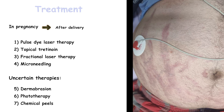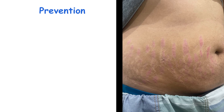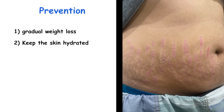There are various ways to prevent stria distensae, such as gradual weight management, since rapid weight gain or loss may affect the skin and promote stretch mark development. Keeping the skin hydrated with moisturizing creams or lotions is also beneficial. A diet rich in vitamins C and E, zinc, and silica can support skin health. Routine exercise helps maintain healthy skin and prevent excessive stretching.